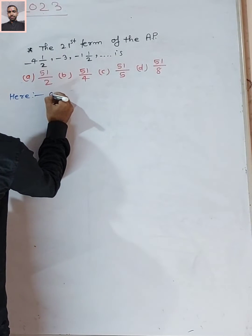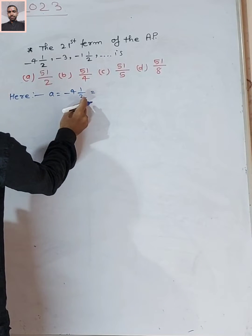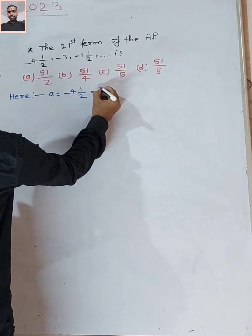Here, the first term is equal to -4½, which we write as -9/2.